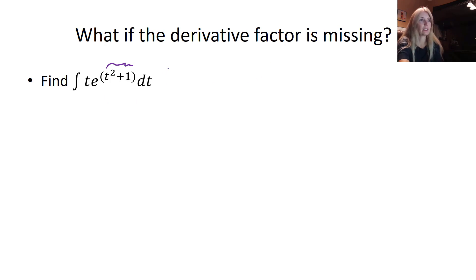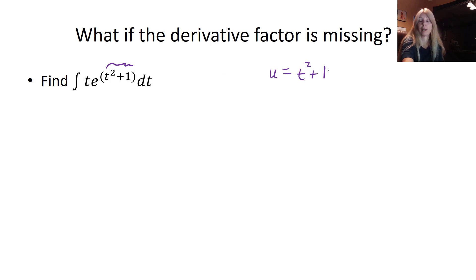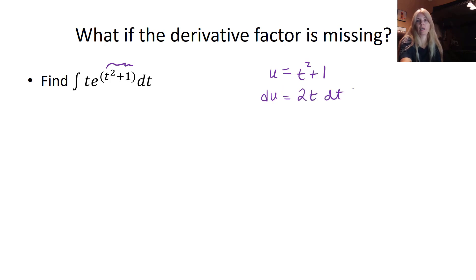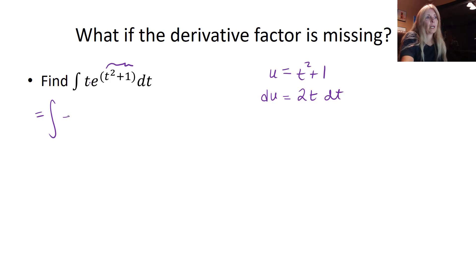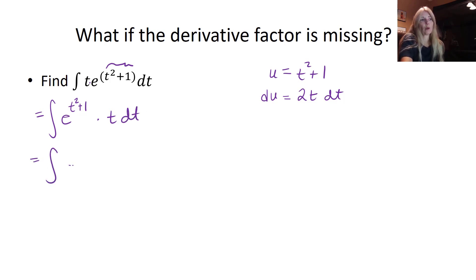So let's see if this works. If I let u equal t squared plus 1, when I take the derivative I should get what's left over. The derivative of t squared is 2t dt. I can rearrange this: e to the t squared plus 1 times t dt. We said u equals t squared plus 1, but there's a 2 left over.